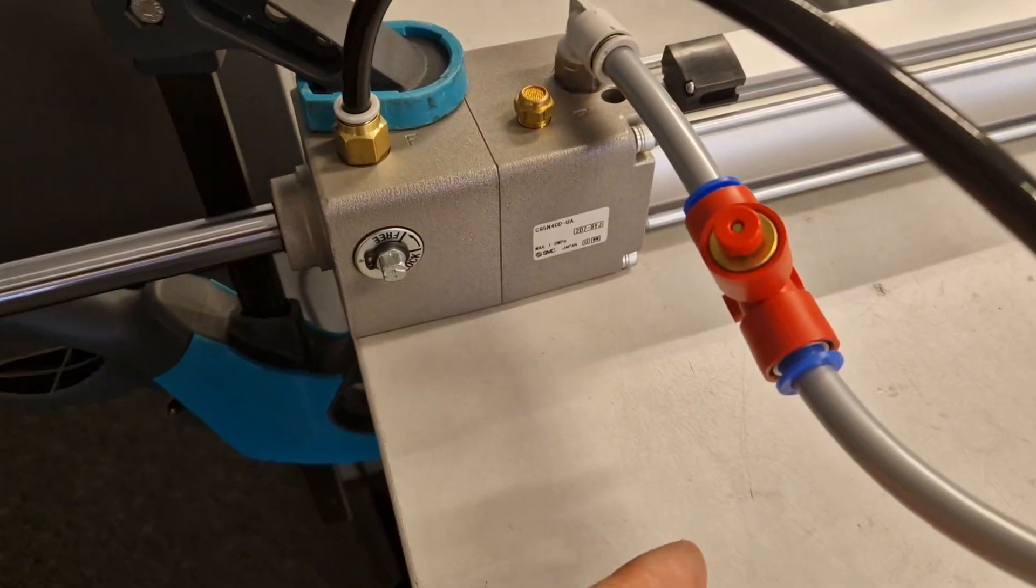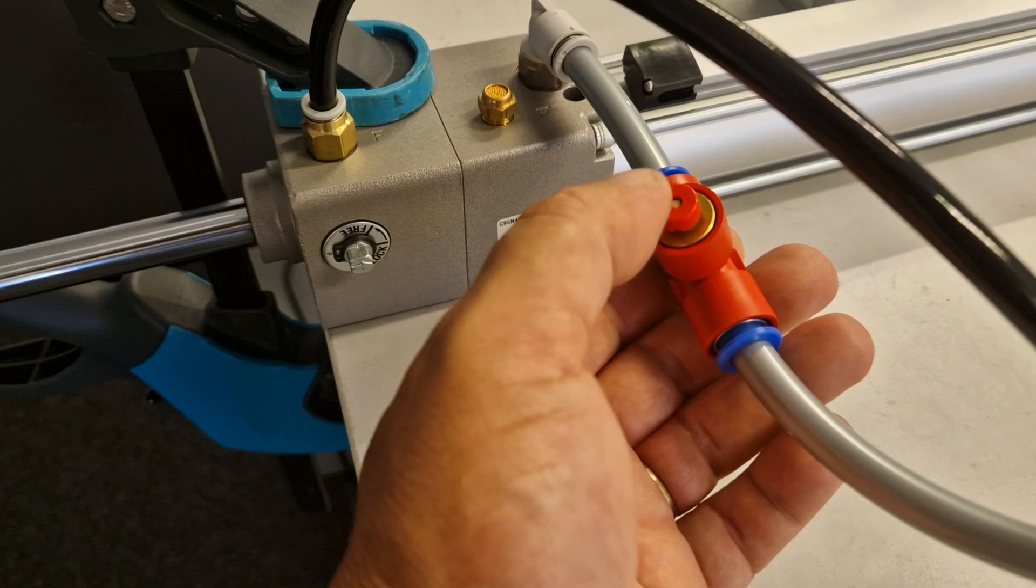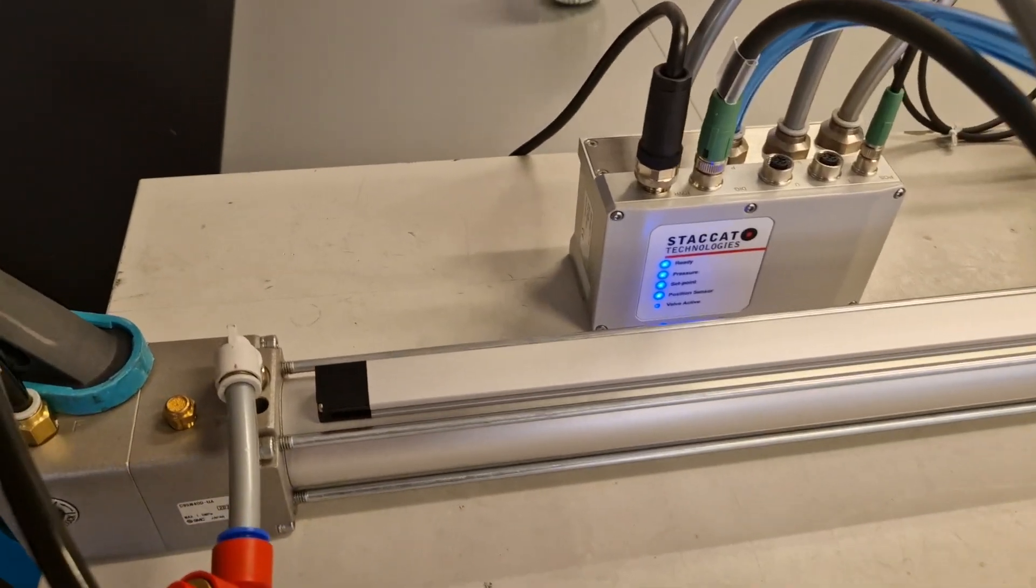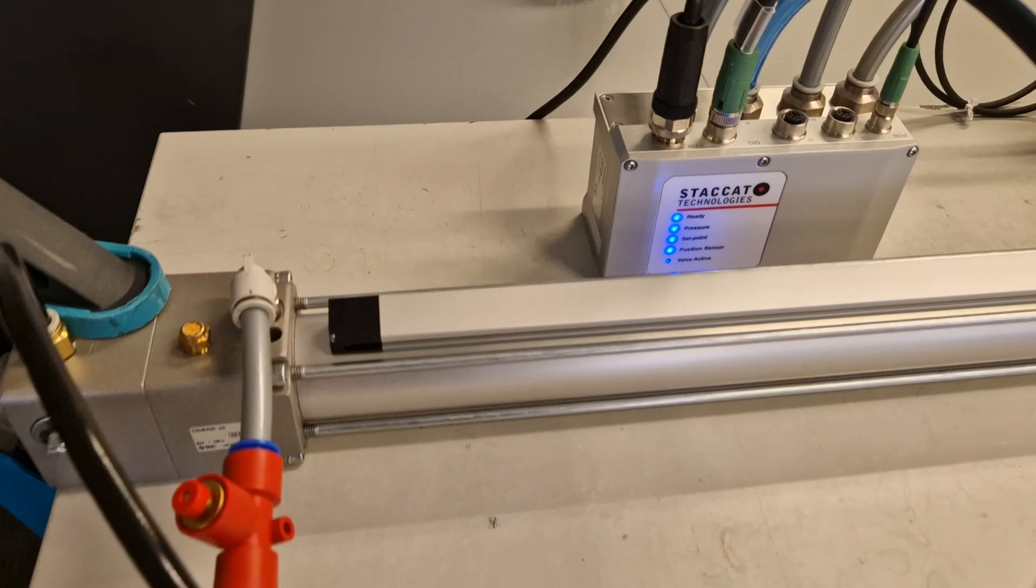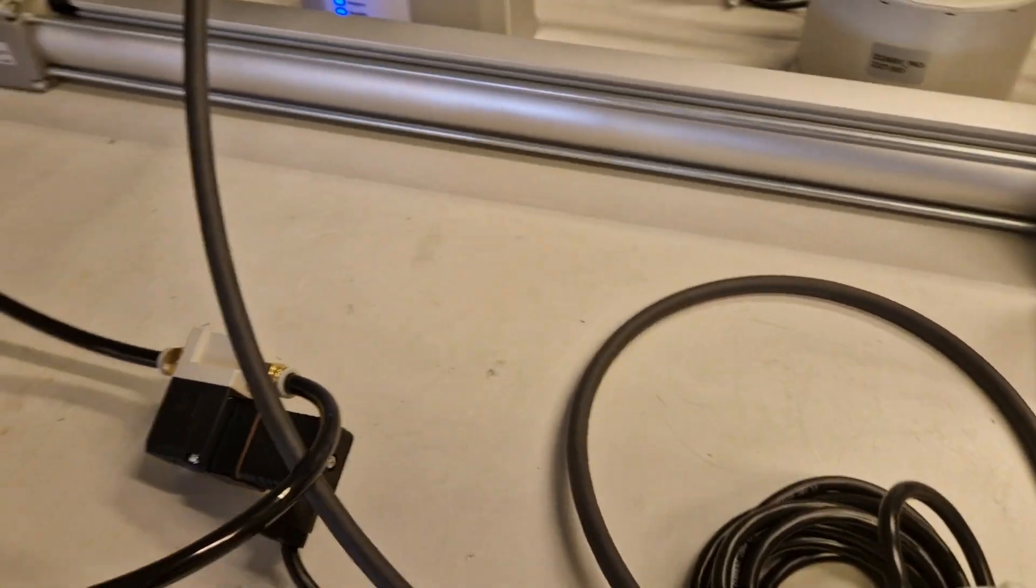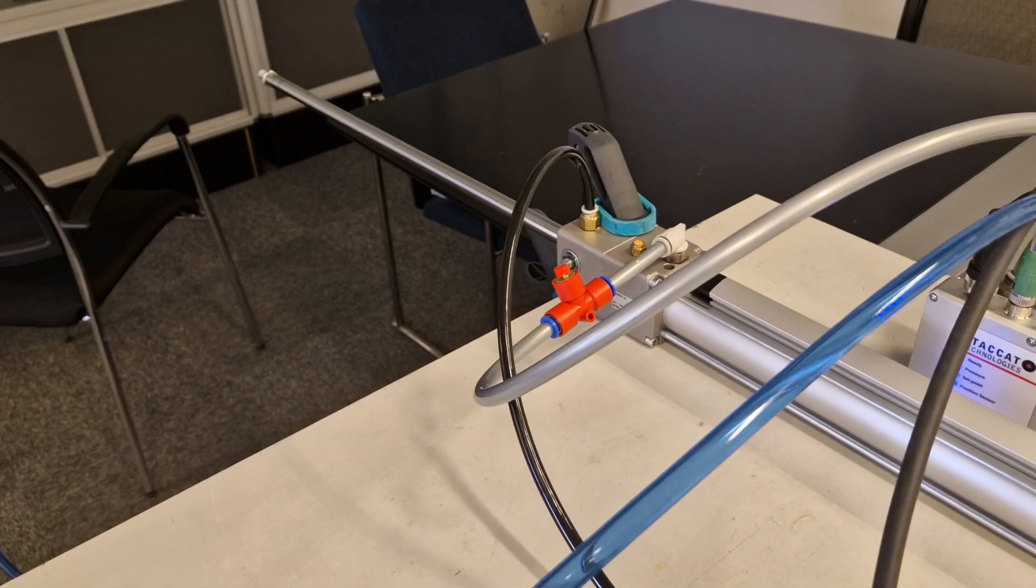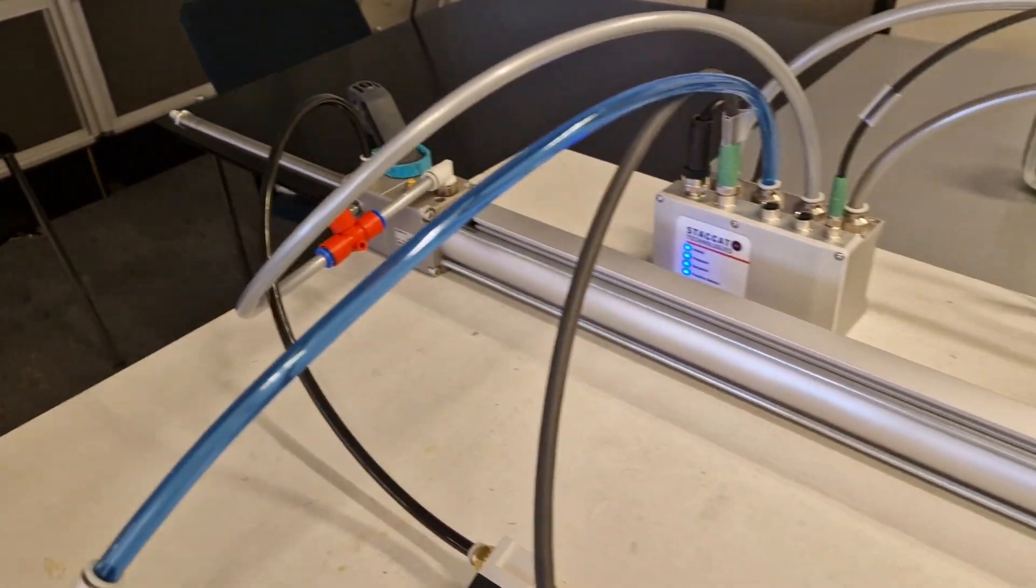It also monitors the pressures continuously. If you have a leakage, like here, you hear that the positioning unit compensates for the leakage, so we don't have dangerous movement when you start positioning again. Simple as that.